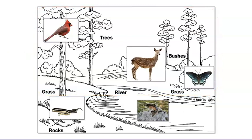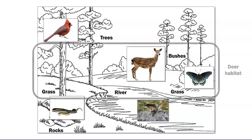Next, we'll think about the deer. What parts of this environment make up the deer's habitat? What does the deer need to survive? Well, the deer lives on land. It eats grass and other low plants. So the deer's habitat would be here on the ground, where these low plants grow.